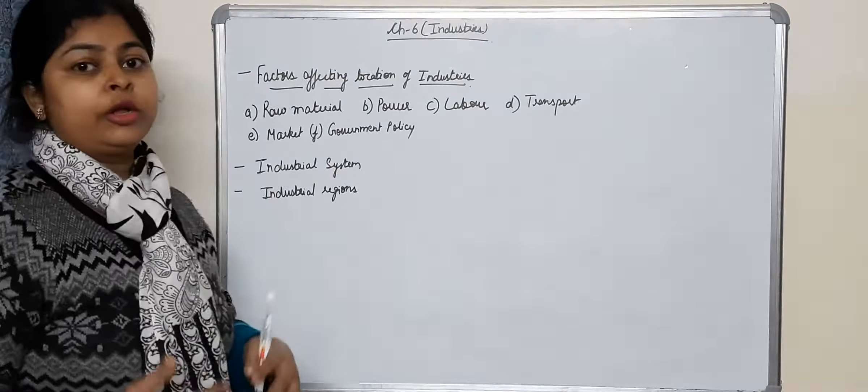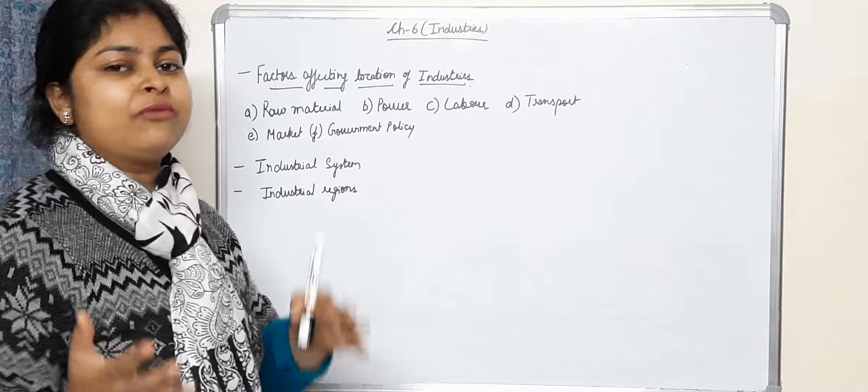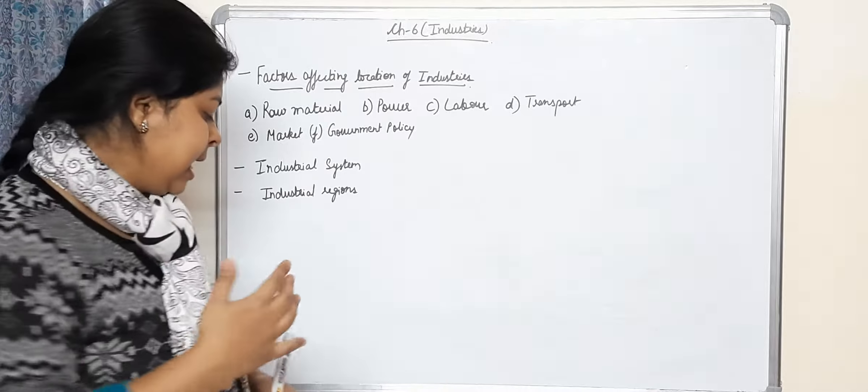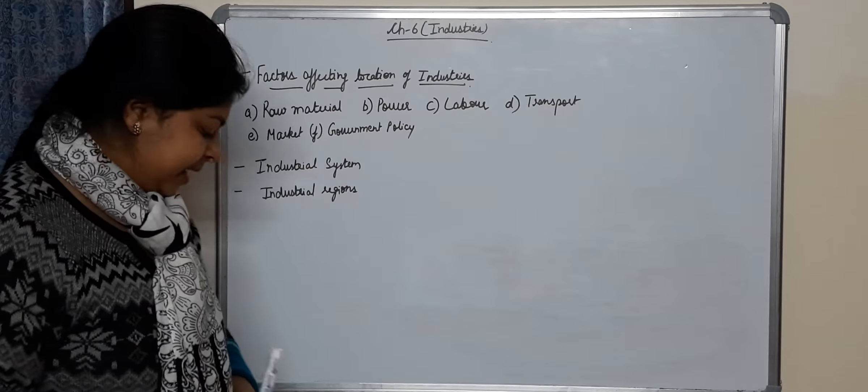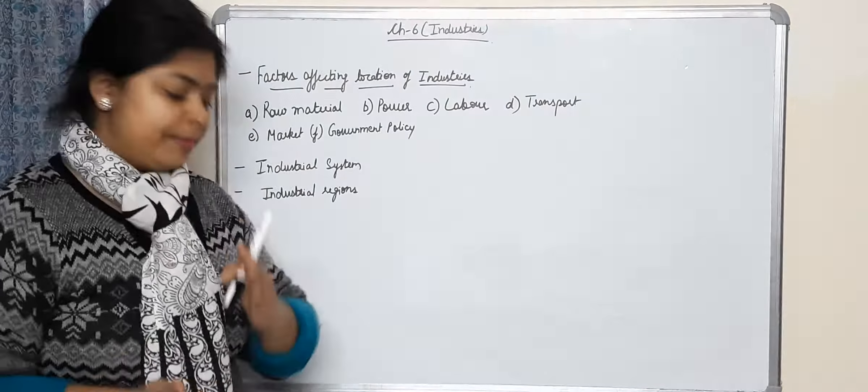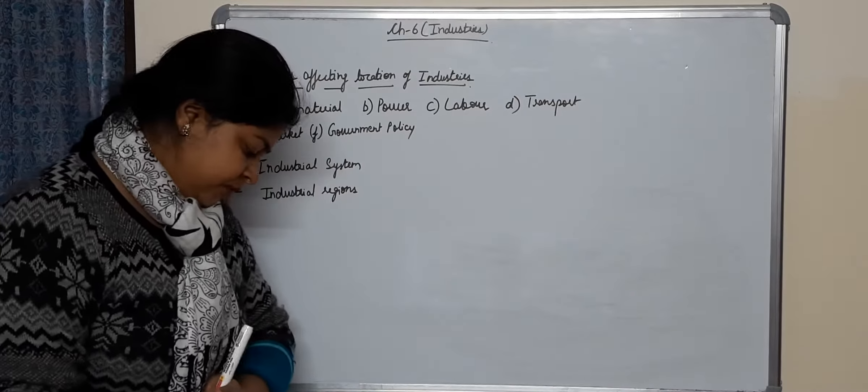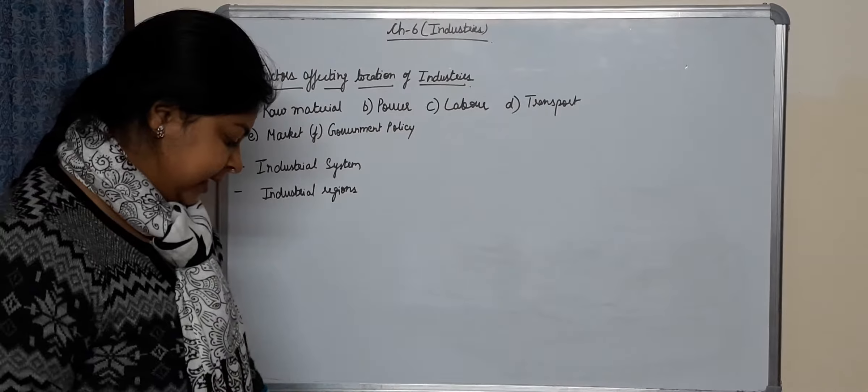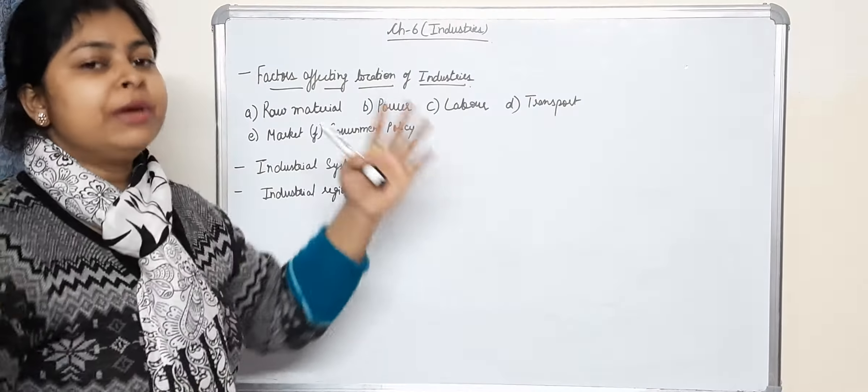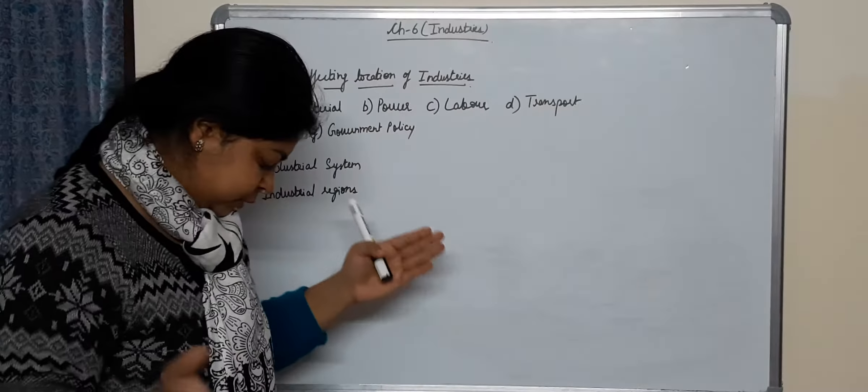And then the raw material can be agro, mineral, marine, pestle and forest based, and the third category is size like it is a big industry, large scale, small scale, or the cottage one.